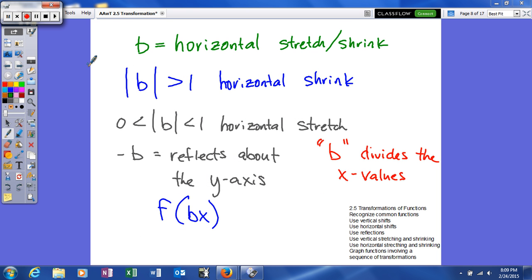Alright, this time, the last thing we need to talk about, of course, is b. Now, b is the coefficient of your x value before you do your parent function. And anytime you have a b, you're going to have a horizontal stretch or shrink.